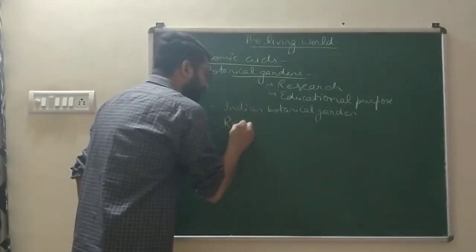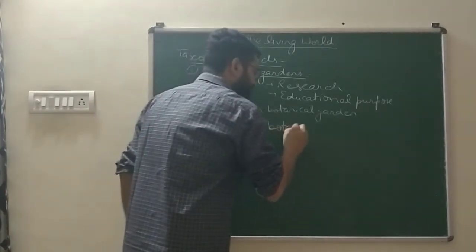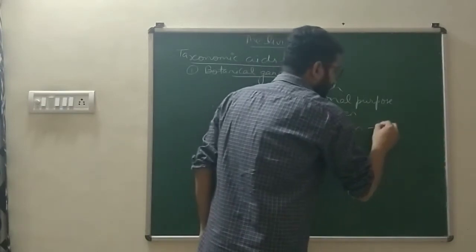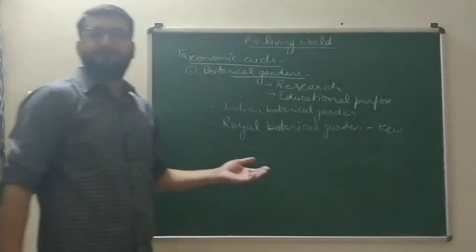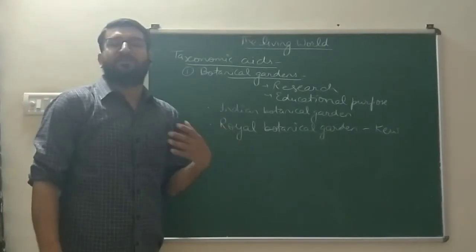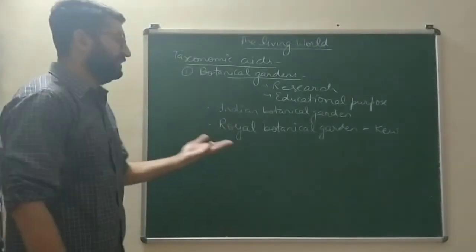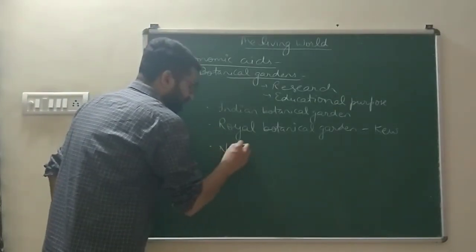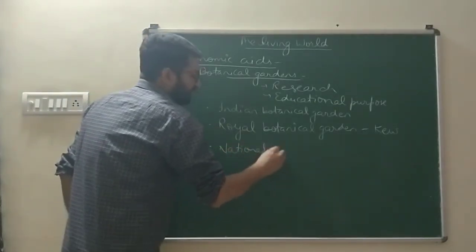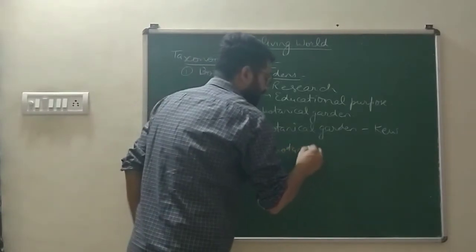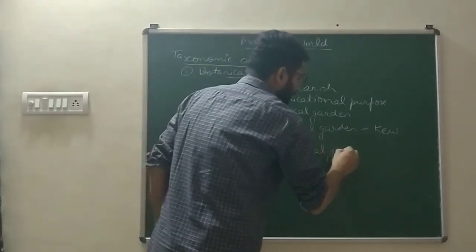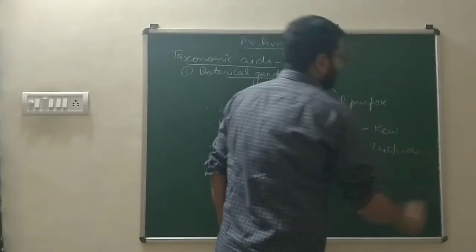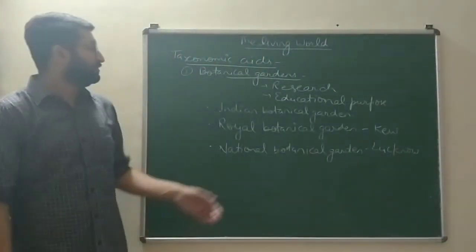Rather than this, the Royal Botanical Garden is present in Kew, London, England — it is one of the largest botanical gardens in the world and is an international botanical garden. We also have a National Botanical Garden in Kulaknam, Uttar Pradesh. These are the main botanical gardens.